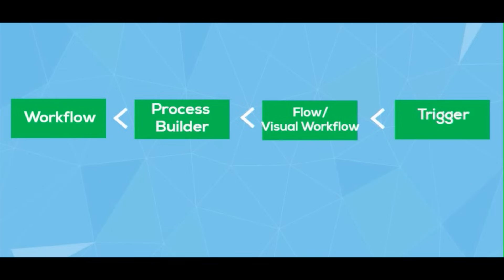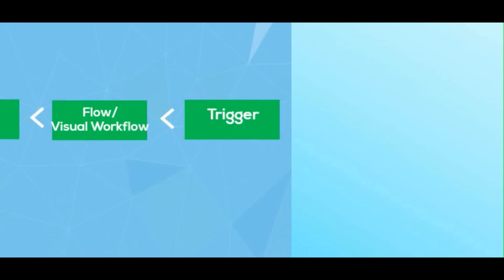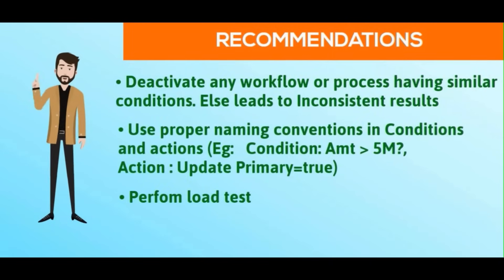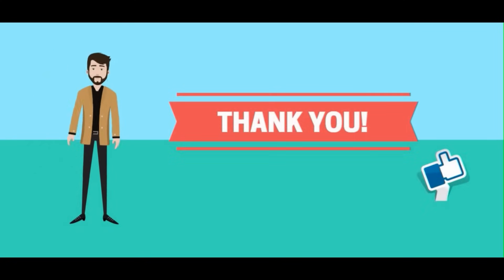Here is a capability chart: if you can't do a requirement with Workflow, Process Builder can do it. If Process Builder can't do it, a Flow or Visual Workflow can. If even that can't handle it, then you use a Trigger — you have no option there. Recommendations: deactivate any workflow or process with similar conditions to avoid inconsistent results. Use proper naming conventions for conditions and actions — for example, 'Condition: Amount Greater Than 5 Million, Action: Update Primary = True' — so you understand the logic just from the name. And perform a bulk load test to verify your process works properly. Thank you so much — if you like this video, give a thumbs up!